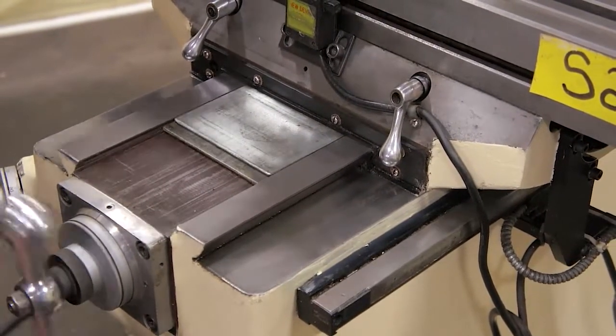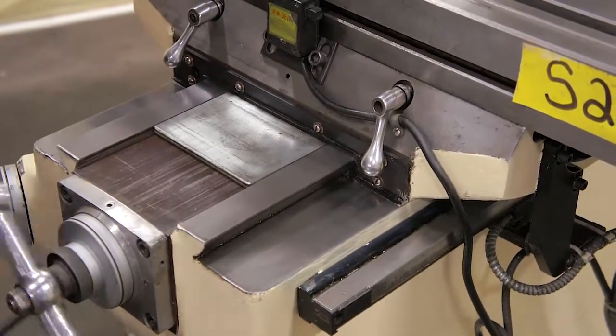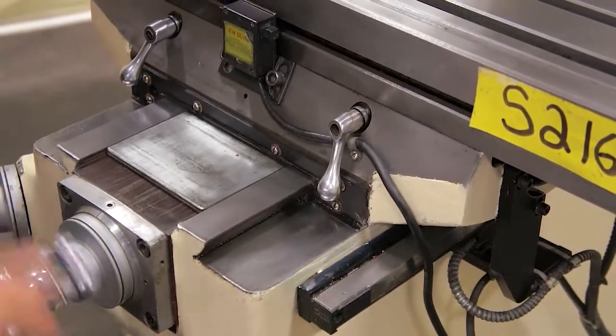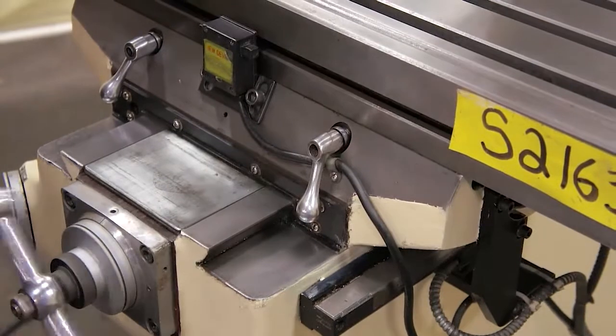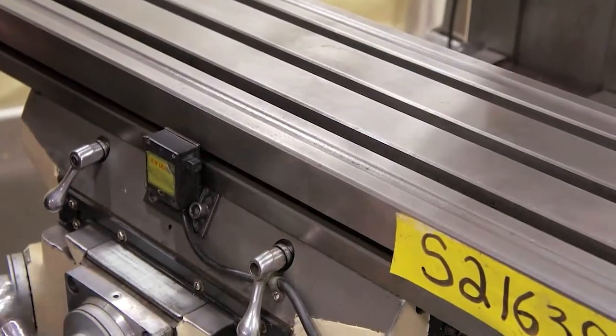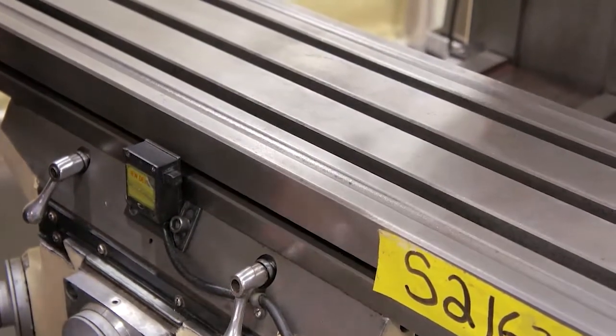Same thing on the X axis. There is no tight spots, no binding. There is very little wear. You can see I am doing this with no effort at all. As you can see the ways are still in nice condition on the back.